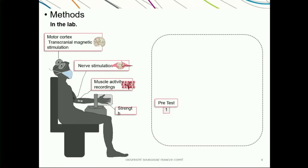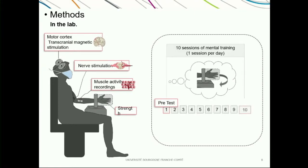The participant is tested on day one and then follows a daily mental training for 10 sessions — one session per day. Each training session lasts about 20 minutes and involves 60 imagined muscle contractions. We record muscle activity to ensure that there is no actual muscle contraction; the participants remain at rest during all the training. We test the participants after the end of the mental training on day 10, and by comparing all these evaluations between day one and day 10, we can quantify the physiological mechanisms induced by mental practice.